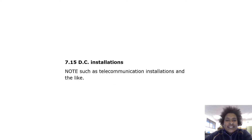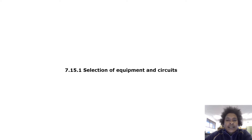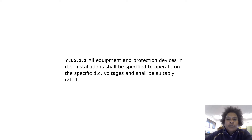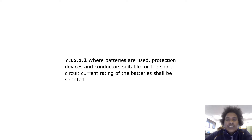DC installations — such as telecommunication installations — require careful selection of equipment and circuits. All equipment and protective devices in DC installations shall be specified to operate on the specific DC voltages and shall be suitably rated. Where batteries are used, protection devices and conductors suitable for the short-circuit current rating of the batteries shall be selected.